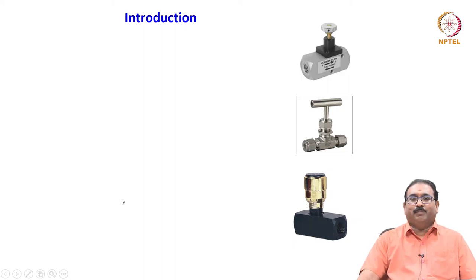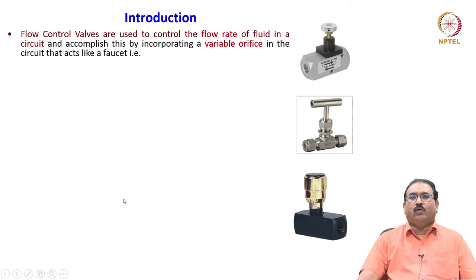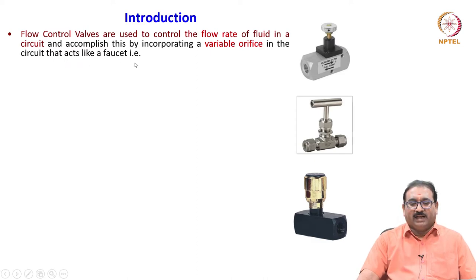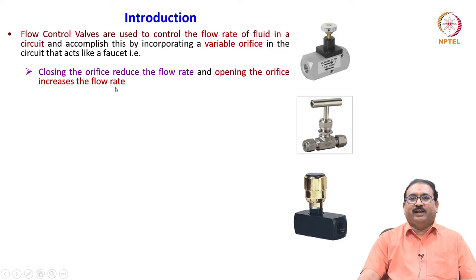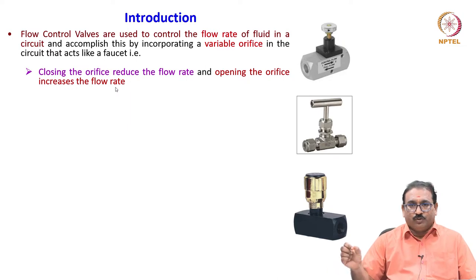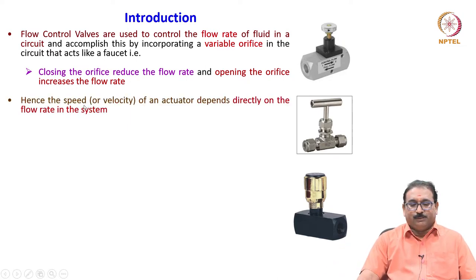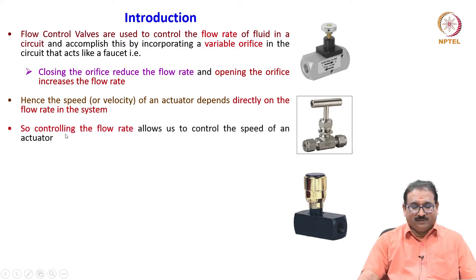I will give you a brief introduction about the flow control valve. Flow control valves are used to control the flow rate of a fluid in a circuit, accomplished by incorporating a variable orifice that acts like a faucet — closing the orifice reduces the flow rate and opening it increases the flow rate, like a tap in your bathroom. Hence, the speed or velocity of an actuator depends directly on the flow rate in the system, so controlling the flow rate allows us to control the speed of an actuator.